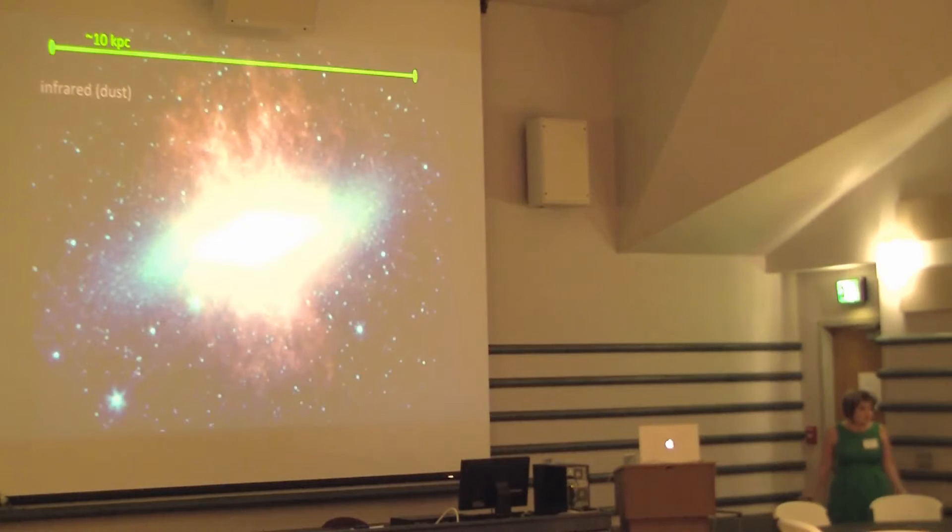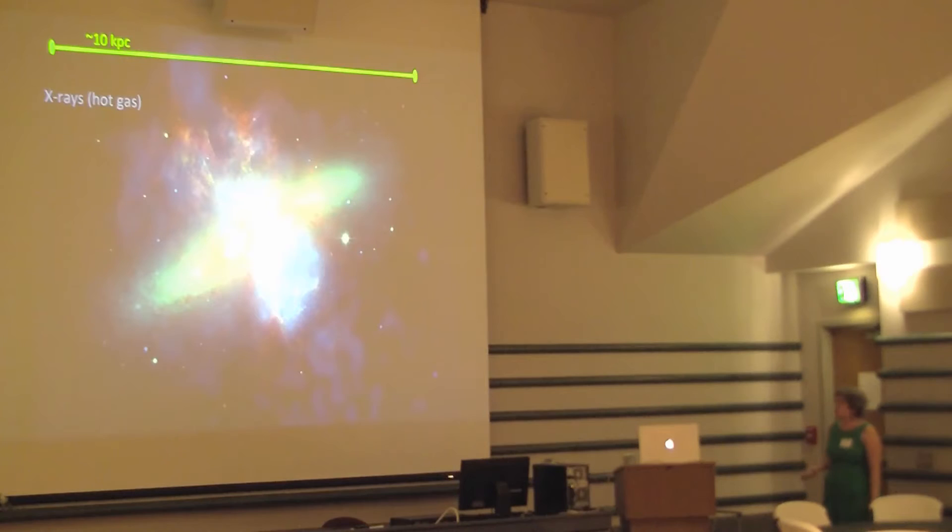Right, so this is about 10 kiloparsecs on this scale, right, these winds are about the same size as we can see. It's seen in dust, dust if you think about it, right, it's mainly carbon, oxygen, maybe some other heavy elements, also being completely blown out of the galaxy. And it's also seen in X-rays, in hot gas, there's an enormous amount of energy and heat that's also going out with these winds and outflows.